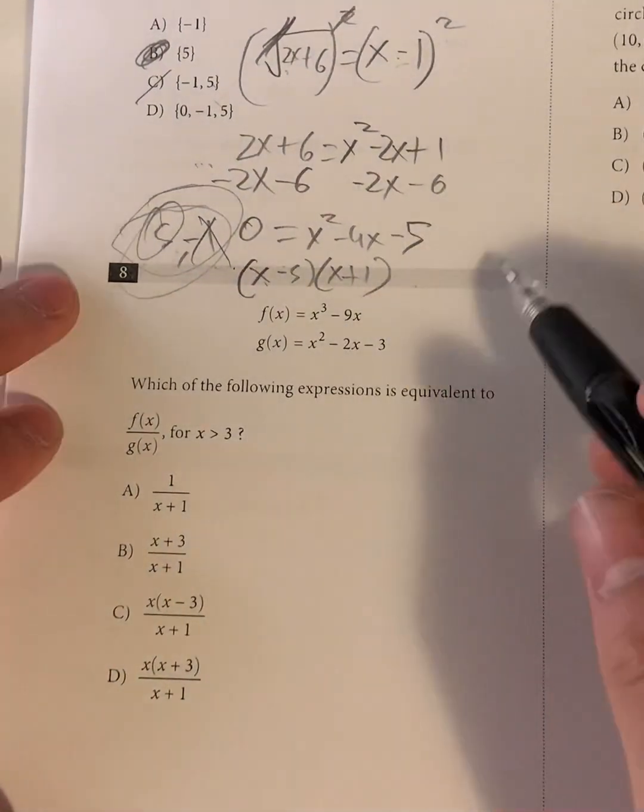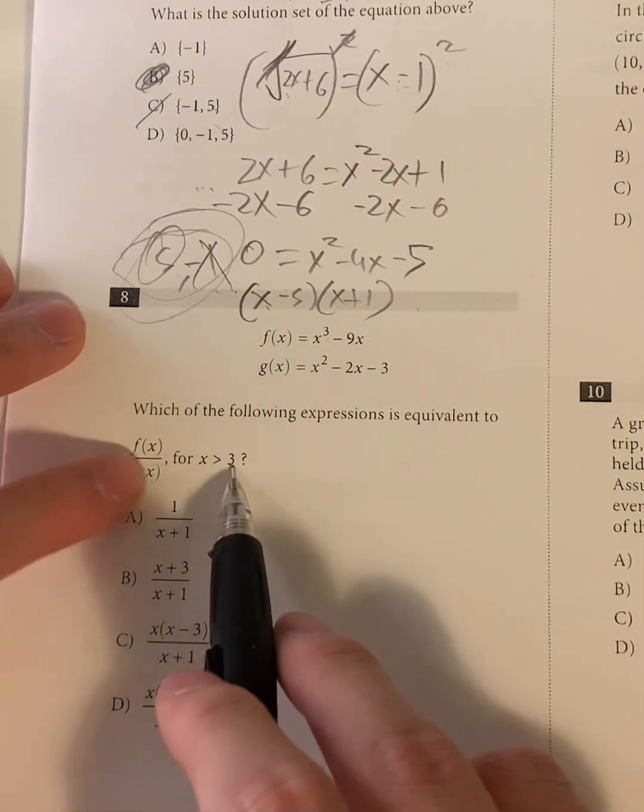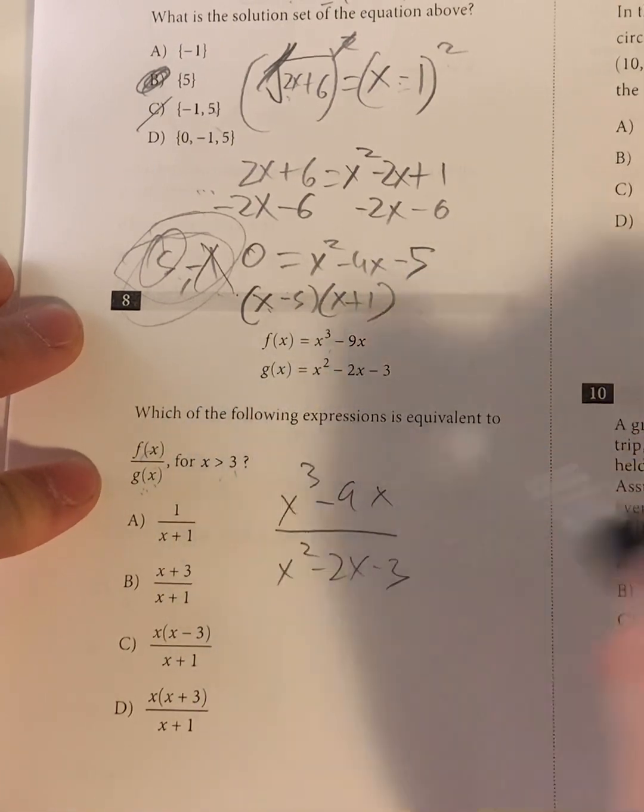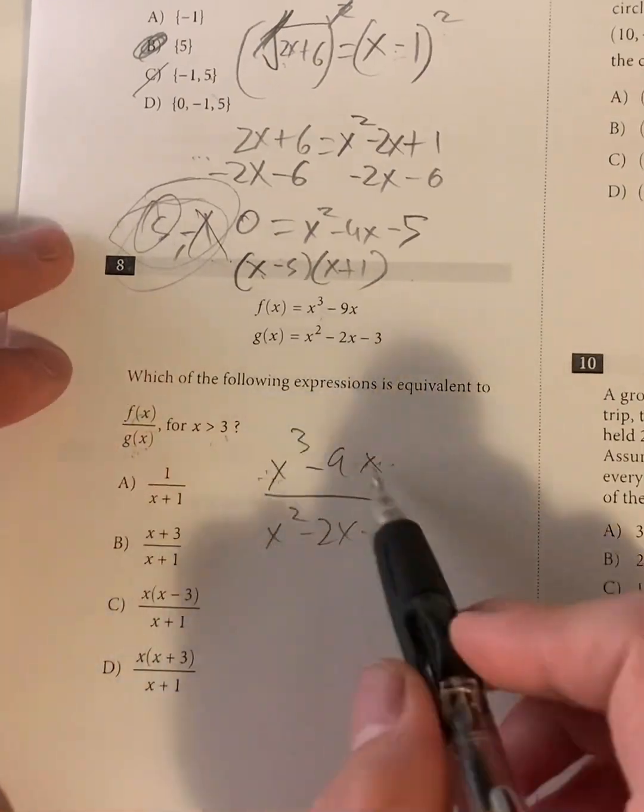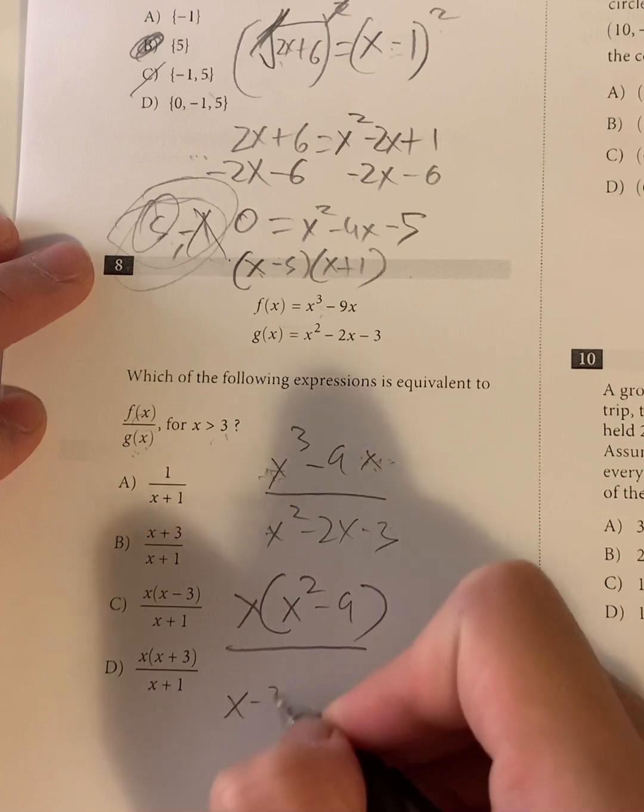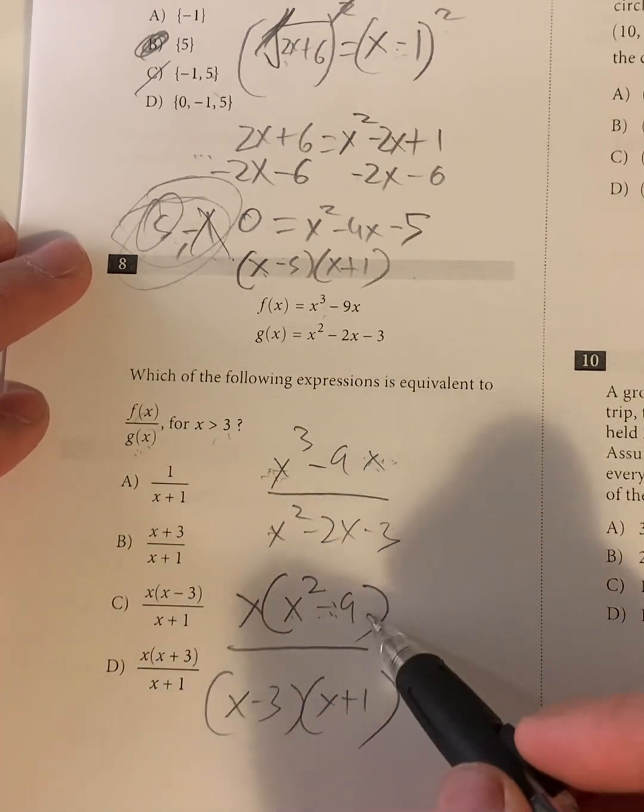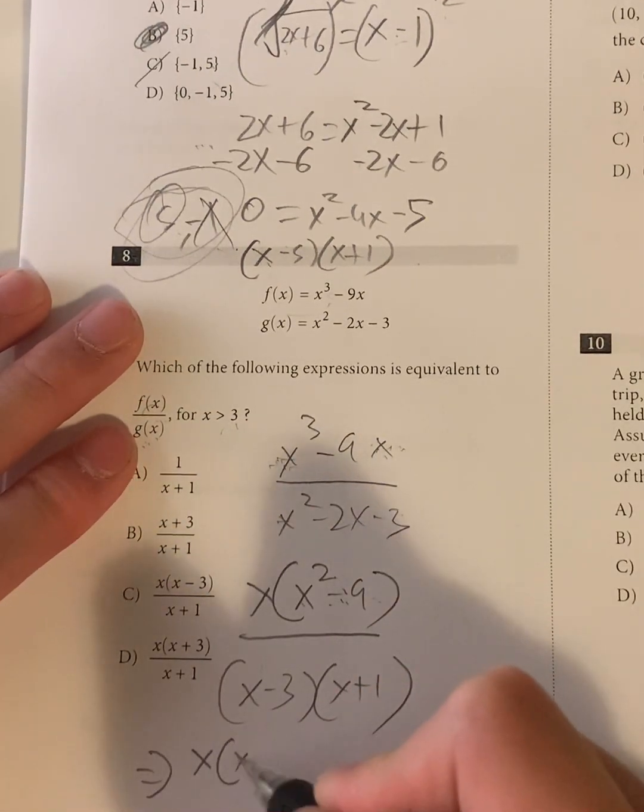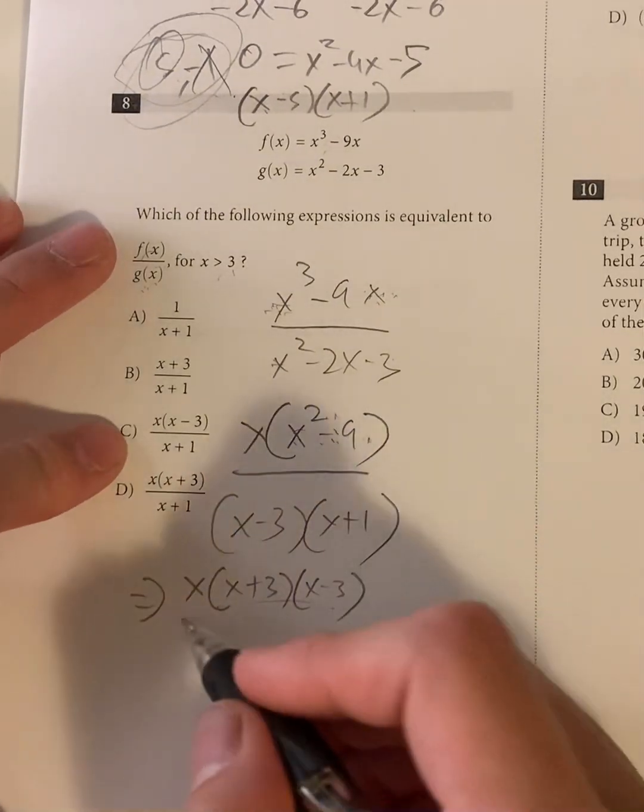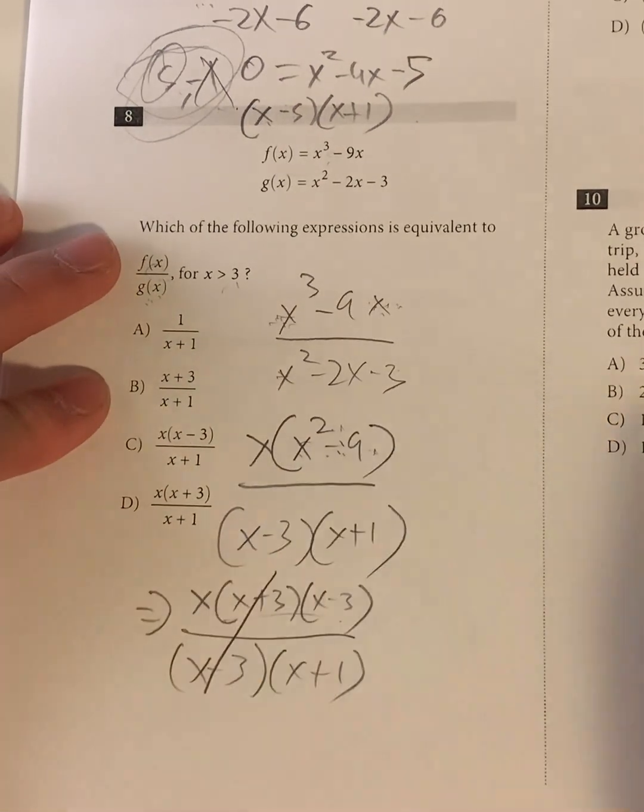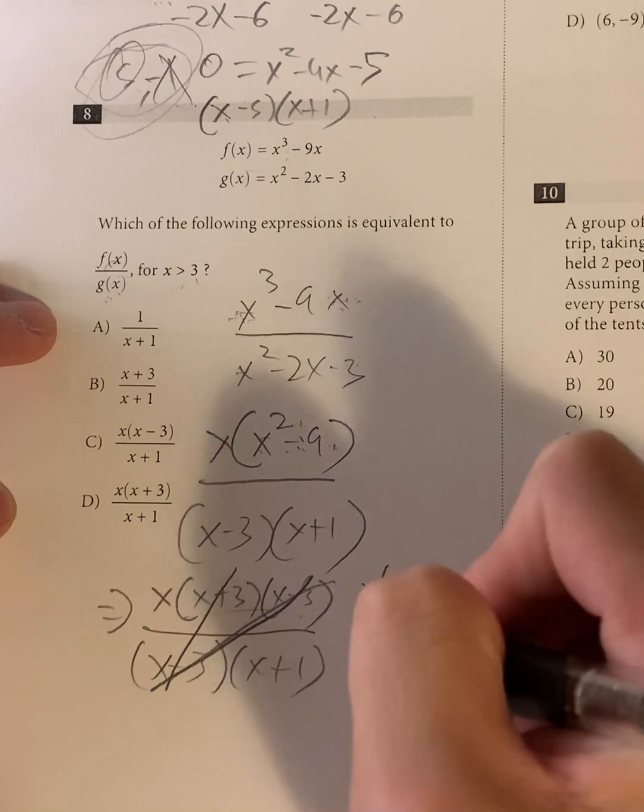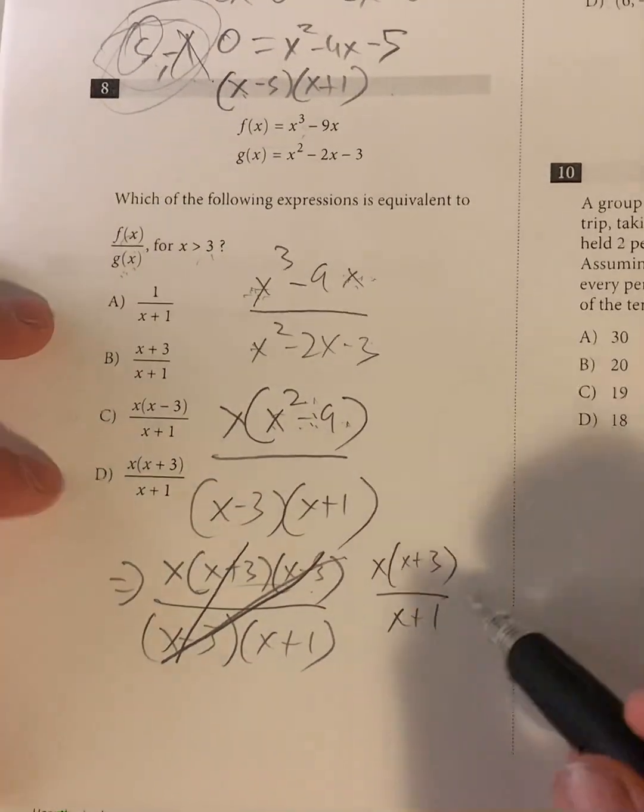Question 8. So we have these two functions, which of the following expressions equivalent to F of X over G of X, where X is greater than 3. So F of X over G of X. So that's going to be X to the third minus 9X over G of X, which is X squared minus 2X minus 3. So let's simplify these by factoring. So what is in common? What is common in both of these? X. So let's factor out the X. So X times X squared minus 9 over, should we factor this? It's going to be X minus 3, X plus 1. Well, is it possible to factor this X squared minus 9? Yes, it is. Because then we get X times X plus 3, X minus 3. This is the difference of squares, so it's a nice thing to remember. So that's how factorization is easier. Over X minus 3 times X plus 1. What's a common factor in both of them? X minus 3. So this should be X times X plus 3 over X plus 1. Is this factorable or cancelable? No. So that means your answer has to be D.